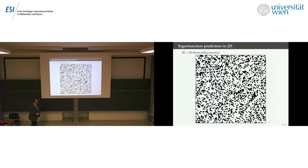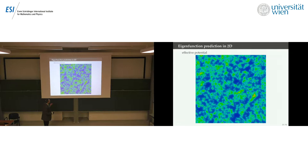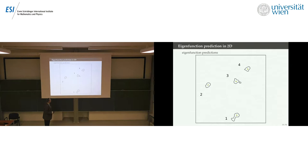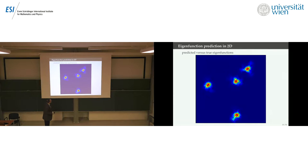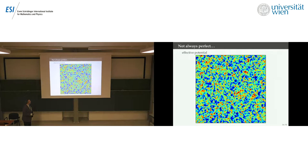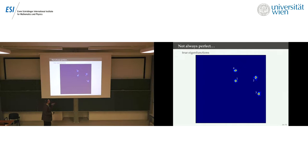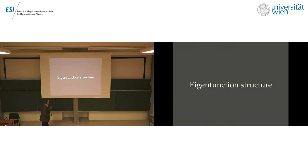Sometimes it's not perfect — in this one case it didn't get them in quite the right order because they're nearly double eigenvalues. But overall, the effective potential tells us where eigenfunctions localize and to what extent. For more structural detail, we turn to the Agmon distance. From the theorem, eigenfunctions behave roughly like the negative exponential of the Agman distance to the central point. We know how to estimate the central point as a local minimum of the effective potential.